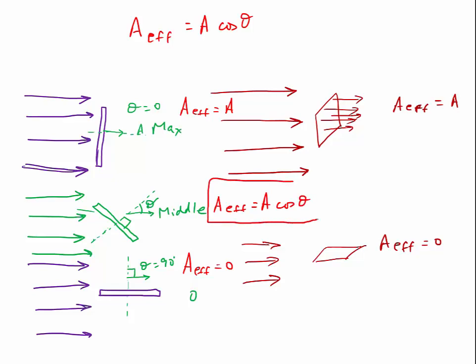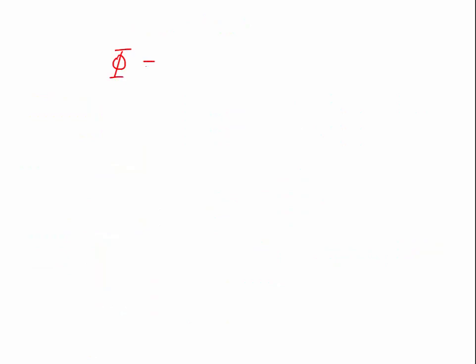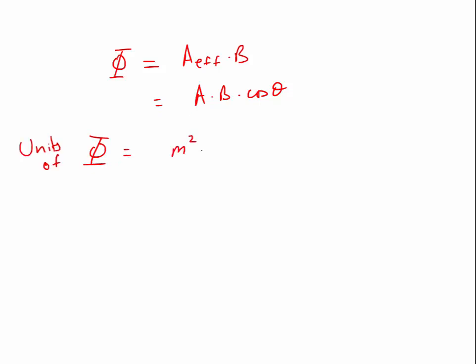So bringing it all together: magnetic flux Φ equals the effective area times B, which equals A·B·cos(θ). The SI units of magnetic flux are the SI units of area (meters squared) times tesla; since cosine theta has no units, we write the unit as tesla·meter², which is called the Weber, spelled W-E-B-E-R, with the symbol Wb.